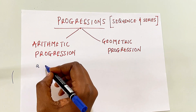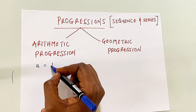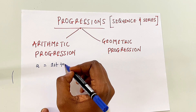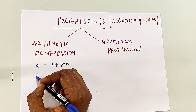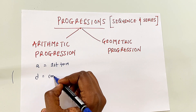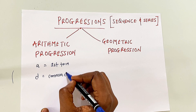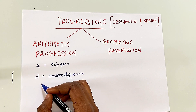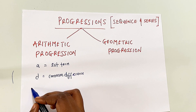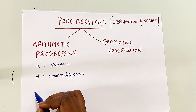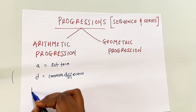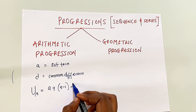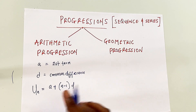First, there's something called 'a', which refers to the first term of an arithmetic progression or a geometric progression. Then there's something called 'd', which refers to the common difference. The formula for finding any term — say the second, third, or any term in the sequence — is represented as u_n = a + (n − 1)d.